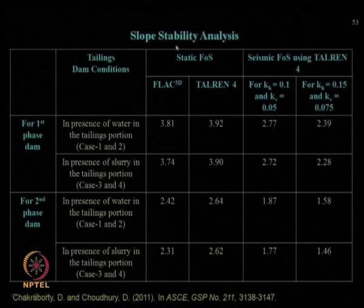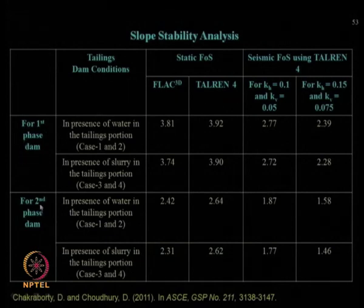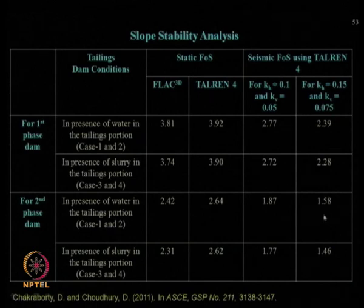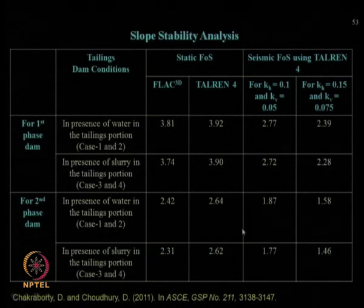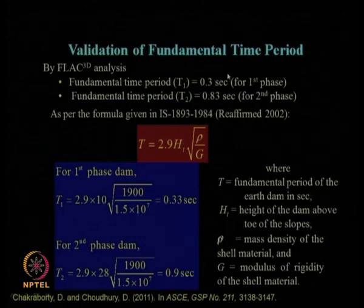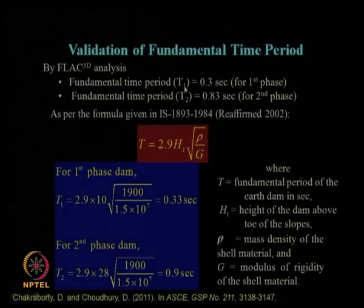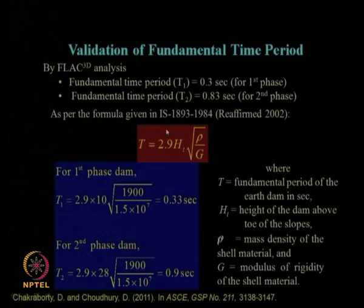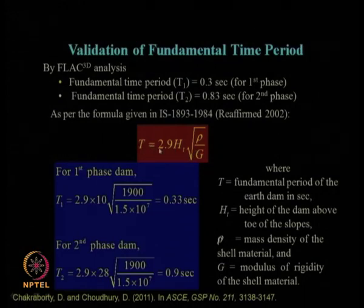Static analysis cannot account for this amplification — only dynamic analysis can. Slope stability analysis using FLAC 3D and TALERAN 4 software for both phases of the dam under different conditions gives static and seismic factor of safety values. In all cases, seismic factor of safety exceeded 1.15, confirming the dam is safe for the given input. The fundamental time period of the structure is also validated: for first phase (10 m), the IS code equation T = f(h, ρ, G) gives values comparable to FLAC 3D output (approximately 0.33 s), and similarly for the second phase (28 m).